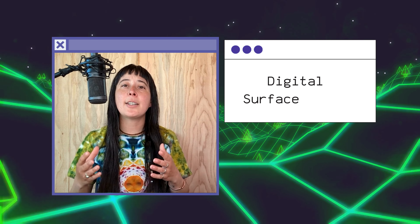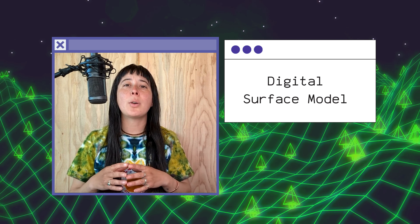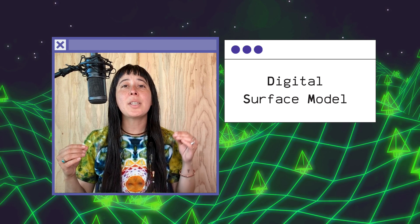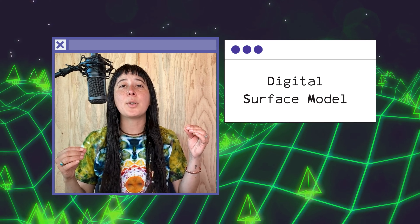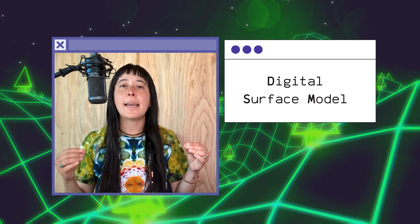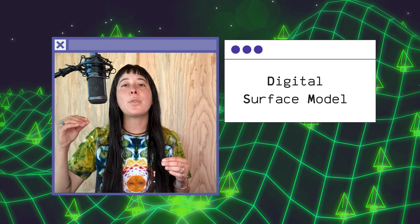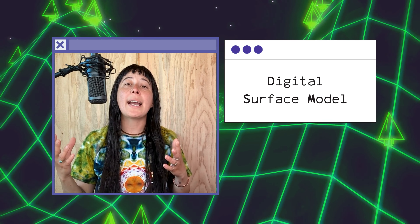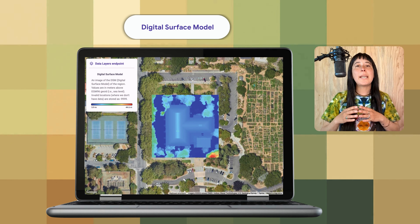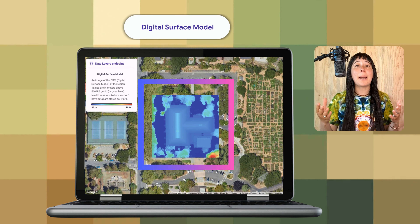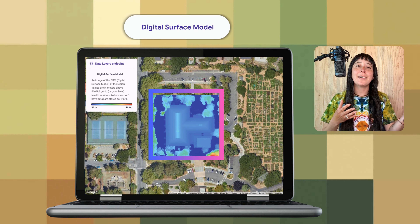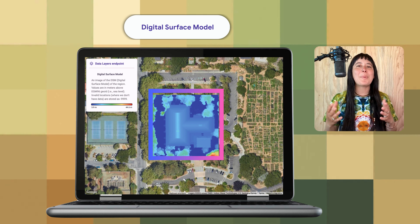Next is the digital surface model, also known as DSM, which details the height of the object at any pixel in the image — like a chimney, the height of the roof at certain points, or the height of nearby trees. You can create a beautiful visual like this heat map by combining the DSM data with the aerial imagery and use a gorgeous palette of colors to really make it pop.